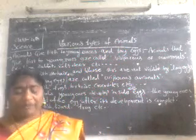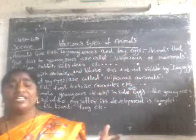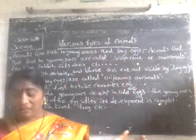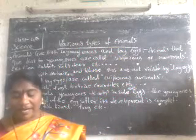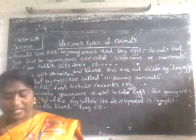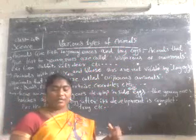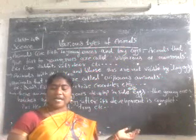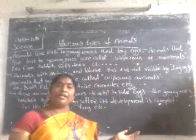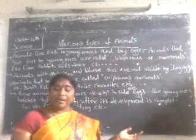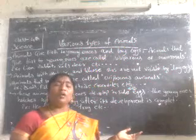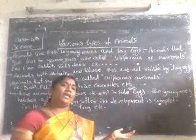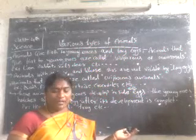Now we have the classification of groups. We divide basically into different kinds of animals. Such as guinea pig and rabbit, monkey, polar bear — these have hair on their skin.